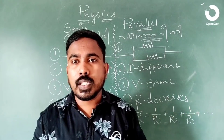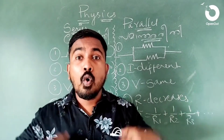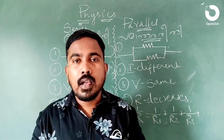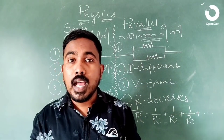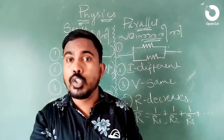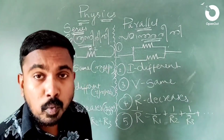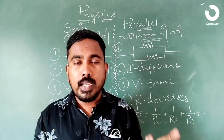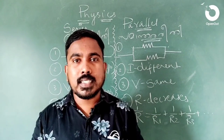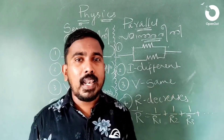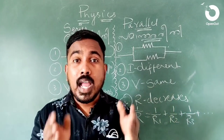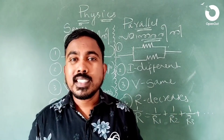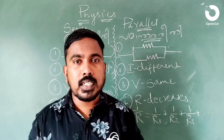We are going to study this for the exam. For a series connection, the effective resistance is R × N. For a parallel connection, we use the same formula R/N. In this way, we are able to reduce the effective resistance in a parallel connection.